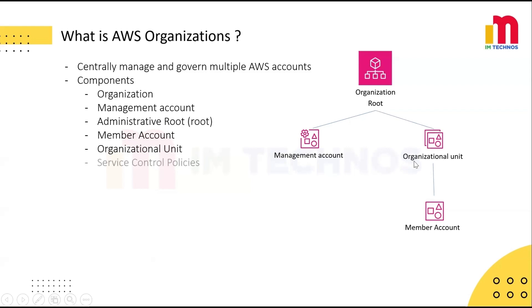Finally, there are service control policies, or SCPs. These are the guardrails for your AWS accounts. They don't give access — instead, they limit what services or actions an account or OU can use. SCPs are great for enforcing security, compliance, and preventing risky actions across accounts.